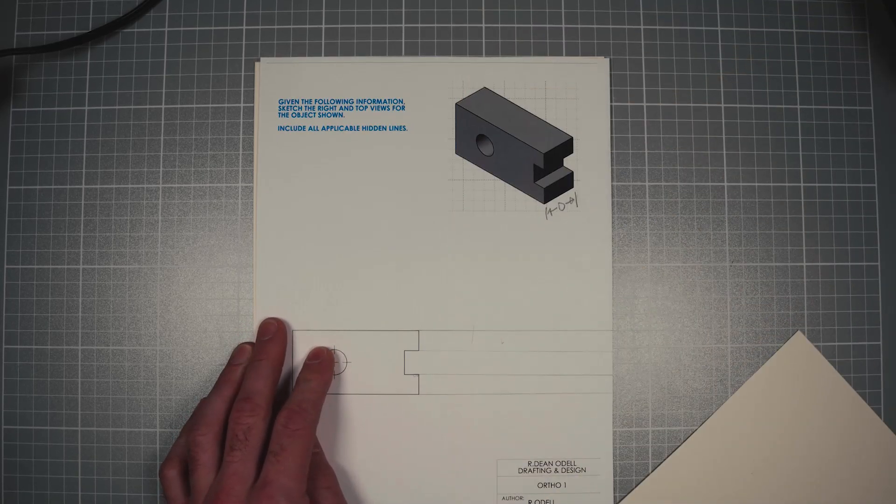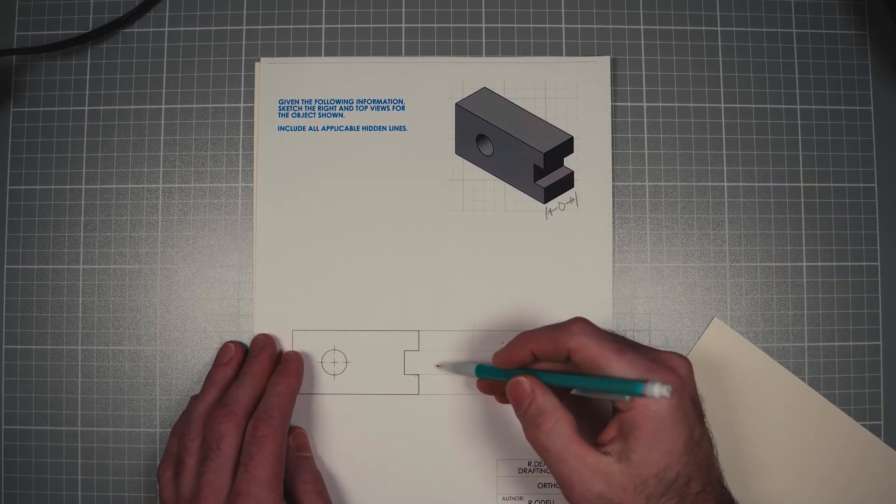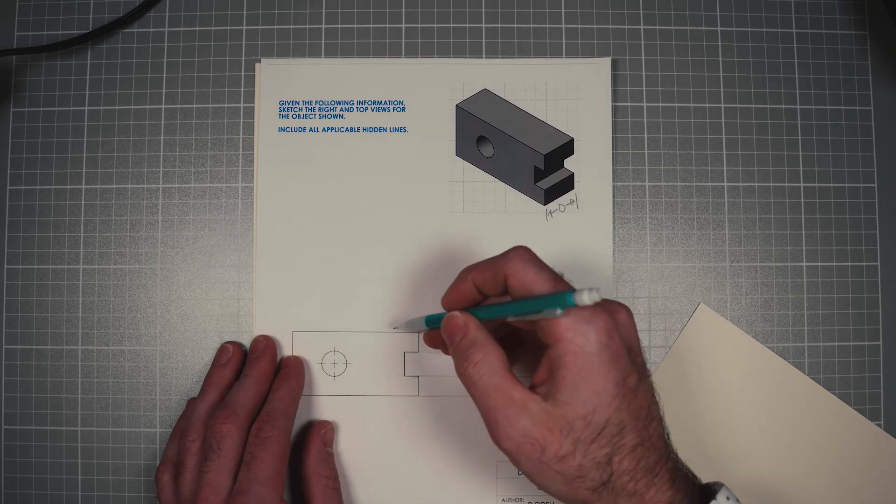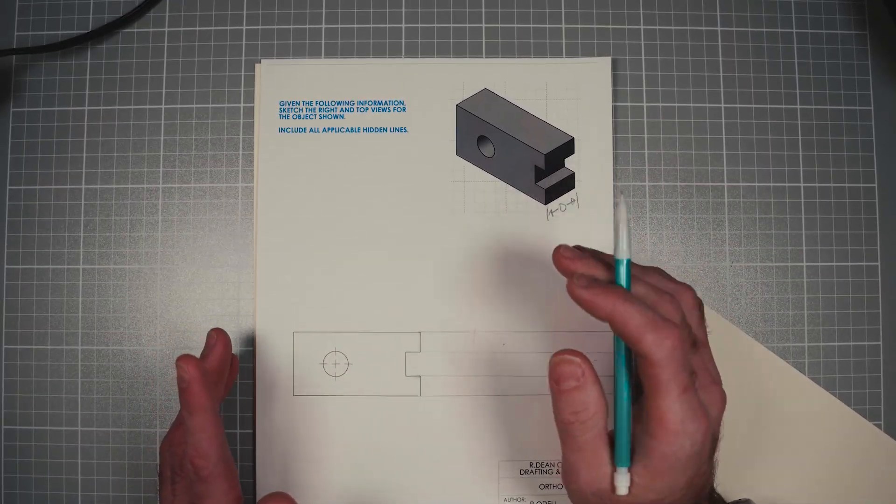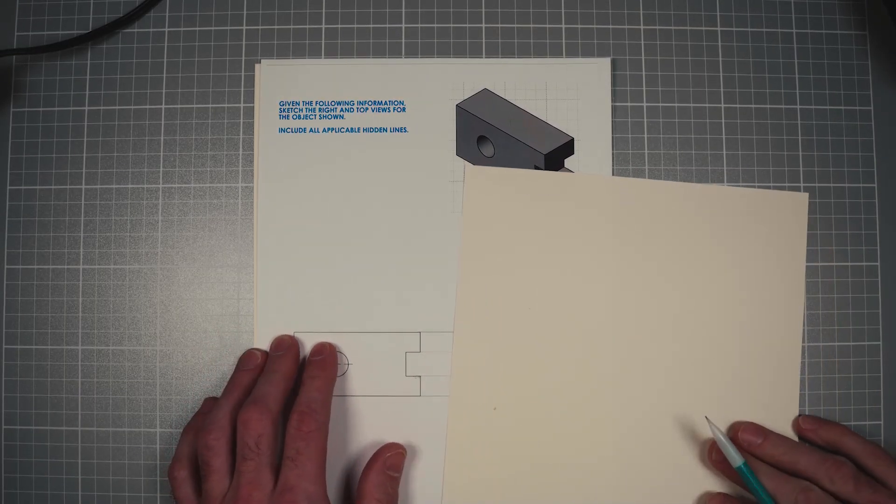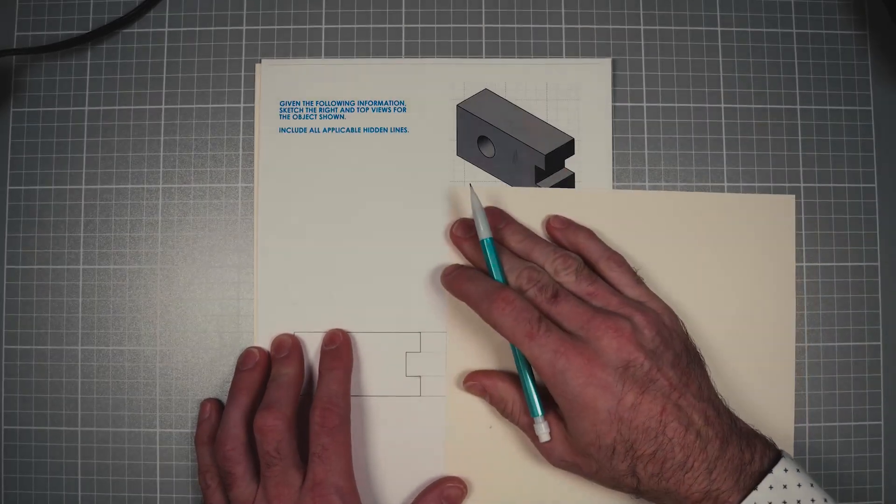Now we've got to decide where we want the views. So if you put the right view really close to the front view, the top view is gonna have to be really close to the front view. And I'll show you, you'll see why in a second. So I'm just gonna pick a spot on the drawing for this edge of the part.